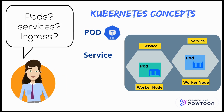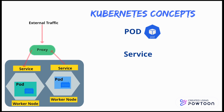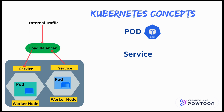A service provides stable IP addresses and DNS names to pods without assigning a new IP whenever a new pod is created. Pods can communicate with each other via services, so we don't have to worry if a pod is created or removed. The service also controls traffic coming to and going from the pod. The default Kubernetes service is ClusterIP, which has no external access and is only accessible within the cluster. Another service is NodePort, which gets external traffic by opening a specific port on all nodes.